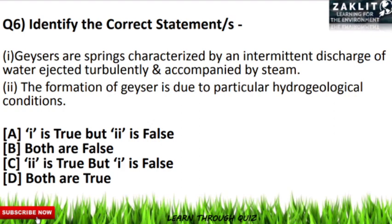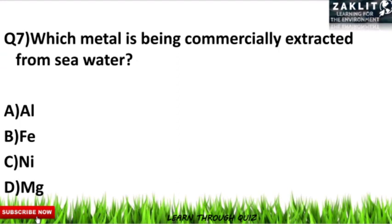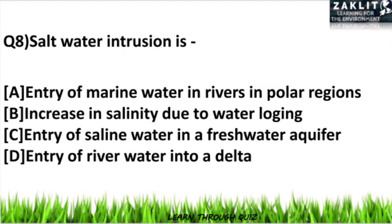Note — this is not the geyser used in households. The seventh question is: which metal is being commercially extracted from seawater? The four options are aluminium, iron, nickel, or magnesium. Use your common sense and try to identify the correct option.